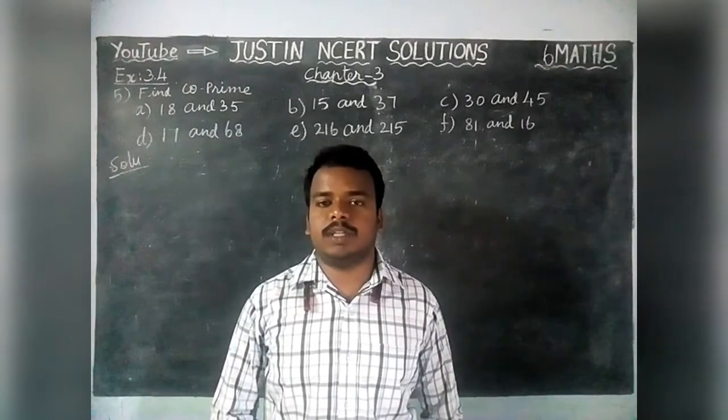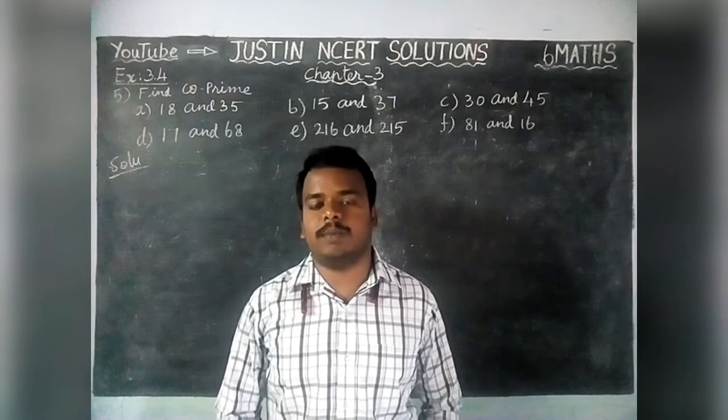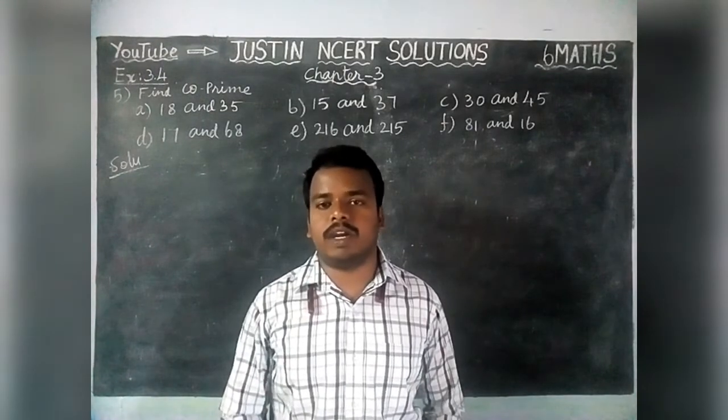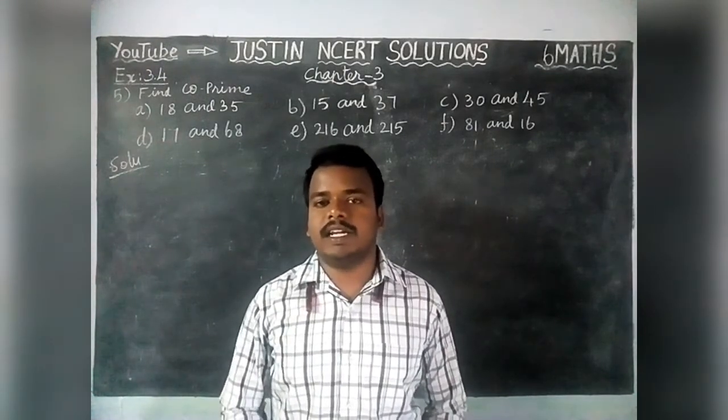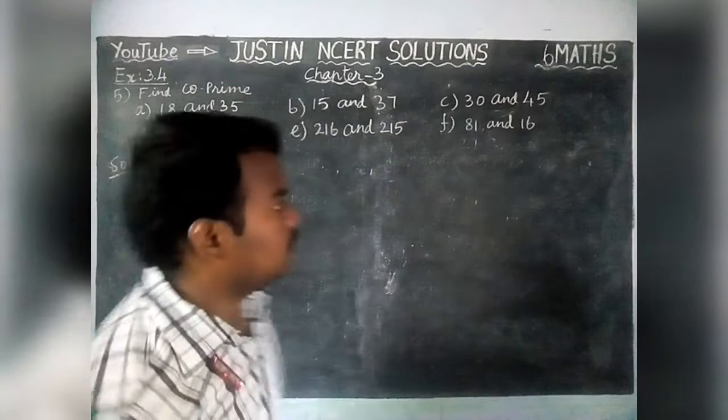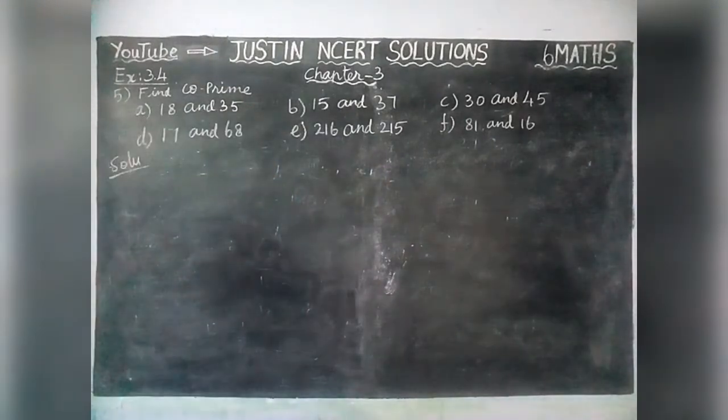The meaning of co-prime is: if two numbers have only one as a common factor, they are called co-prime numbers. Now we are going to check it.